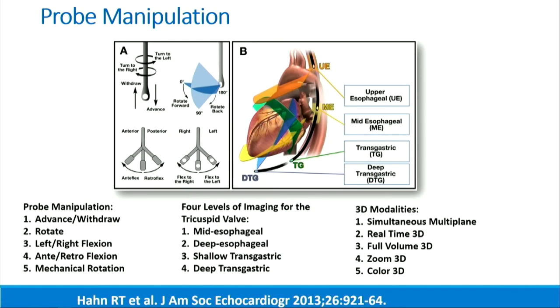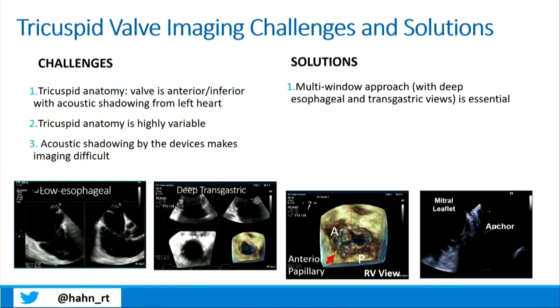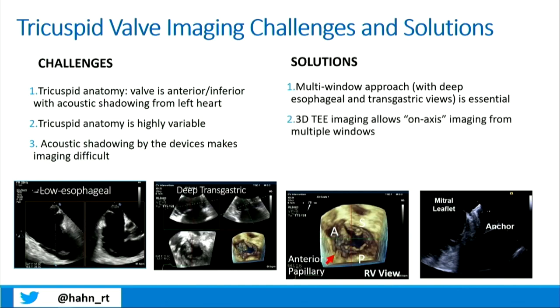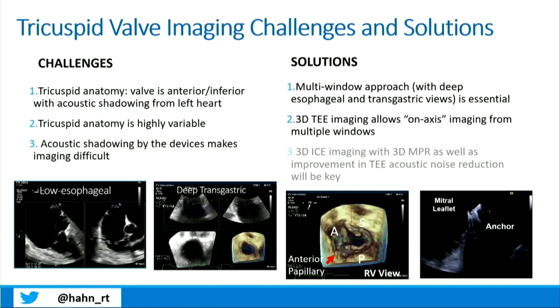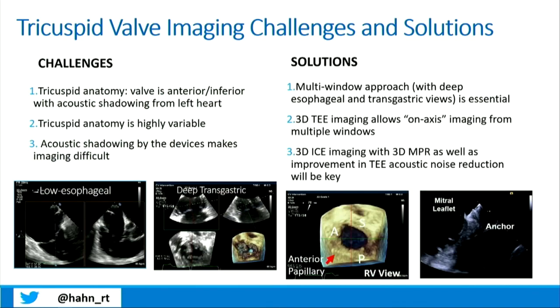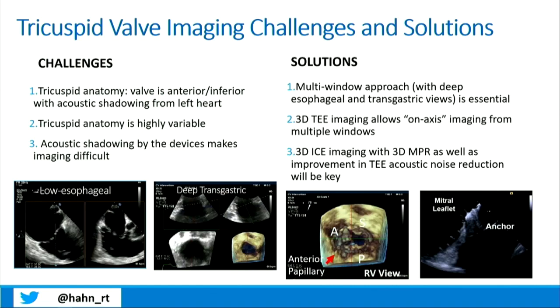The bottom line is that yes, imaging is difficult for the tricuspid valve because of anatomic constraints. However, with the versatility of the transesophageal probe and the new ICE catheters, the challenges can easily be met. Those challenges involve the multi-window approach using the deep and transgastric views, as well as the use of three-dimensional imaging — whether TEE or ICE catheters — and being versatile in your use of all imaging parameters throughout the case. Thanks for your attention.